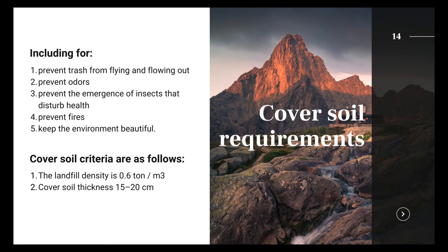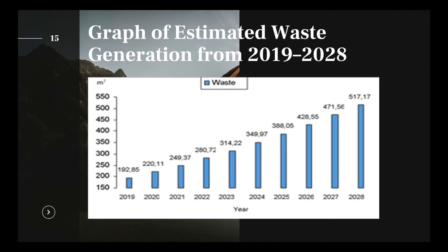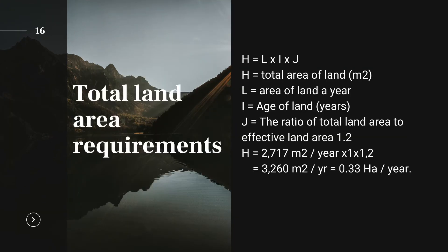Cover land can come from cliff cuts, excavated land at the location, or land taken from the FDS location. The results of the waste volume projection calculation from 2019 to 2028 are presented in the figure. Waste generation is 2 liters per person per day, increasing by 0.02 liters per person per day per year, with a service level of 60% increasing by 1% per year. The total land area requirement is 0.33 hectares per year.